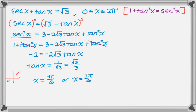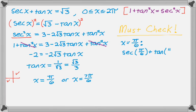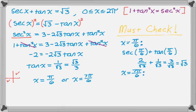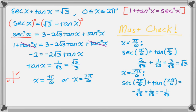Whenever you square both sides you definitely need to check, because you can introduce extraneous solutions. Checking pi over 6: secant of pi over 6 plus tan of pi over 6 equals 2 over root 3 plus 1 over root 3, which is 3 over root 3, which rationalizes to root 3. That works. Checking 7 pi over 6: that's in the third quadrant so secant is negative, giving negative 2 over root 3 plus 1 over root 3, which is negative 1 over root 3 — not equal to root 3. So the only solution is x equals pi over 6.